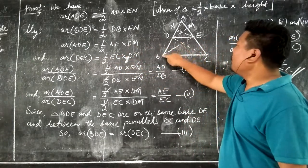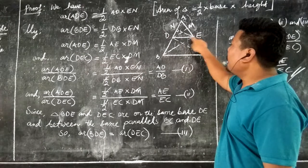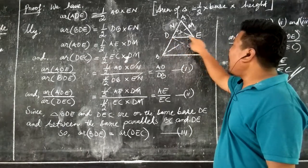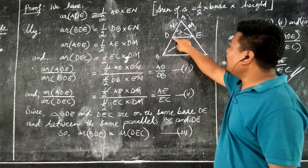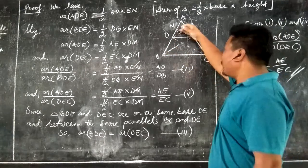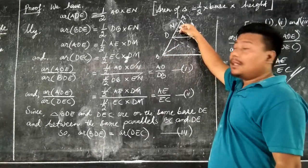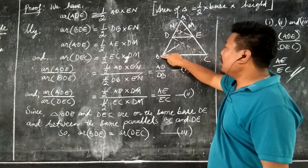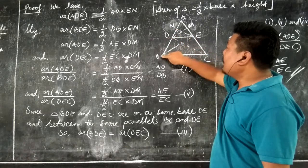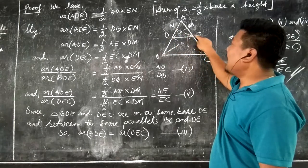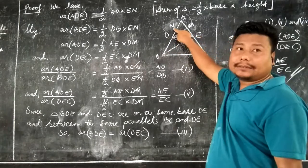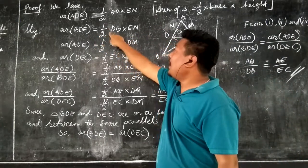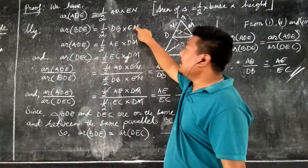Similarly, for triangle BDE, the base is taken as DB. The height of the triangle is drawn from outside the triangle — that means EN is the perpendicular line to AB, so the height for BD also comes as EN. Therefore, area of triangle BDE is equal to half into DB into EN.